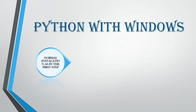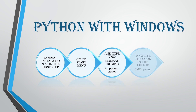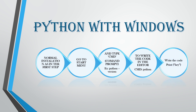The first step of normal installation is done. Next, you need to go to the Start menu, then go to the Command Prompt. In the Command Prompt, you need to type 'python --version' and it is going to give you the Python version. Then you can write code and check it with an editor. We are going to write code as Python and check it.